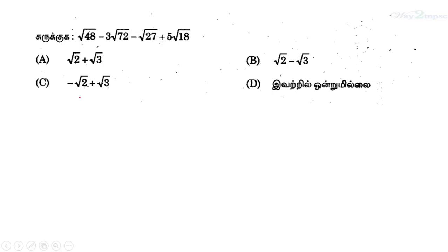Hello friends, welcome to Adhiya Mauntyim. In this video, we will discuss a question about simplification. This is from a recent exam. The question is: root 48 minus 3 root 72 minus root 27 plus 5 root 18.